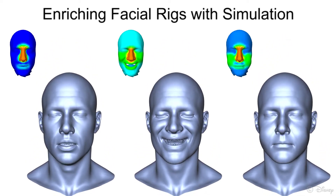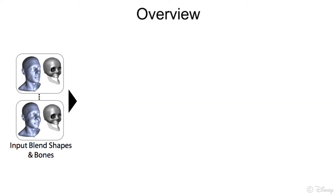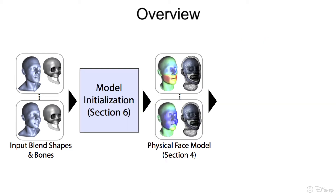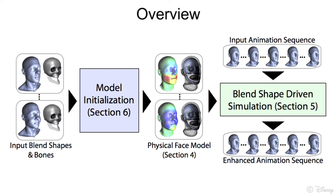Here is an overview of our approach. The artist provides a blend shape rig with skull and jaw bones. From this standard input we initialize our physical face model, which abstracts the complexity of a full muscle based model by approximating all the soft tissues as a single finite element volume. Then, given animation sequences, we apply our blend shape driven simulation method in order to enrich the animation with physical effects like secondary motion.